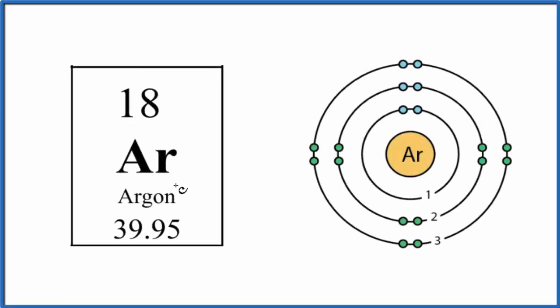Let's take a look at the atomic structure for argon, that's Ar on the periodic table. We're going to use a Bohr model here to help us visualize the atomic structure.